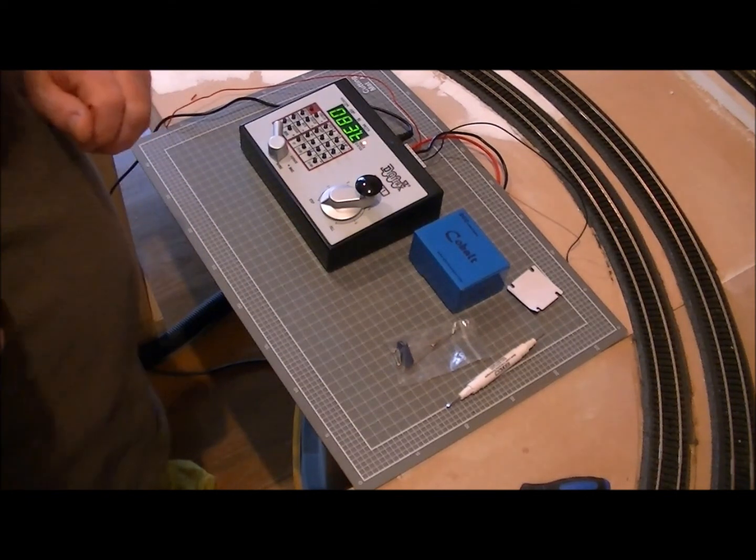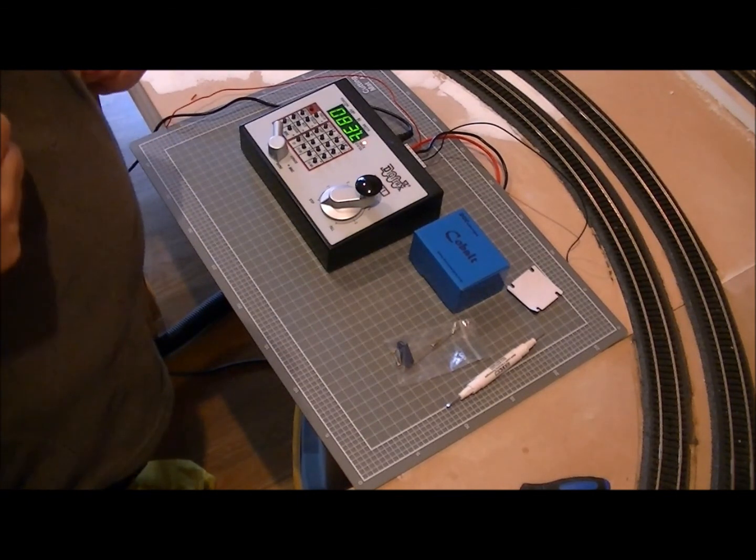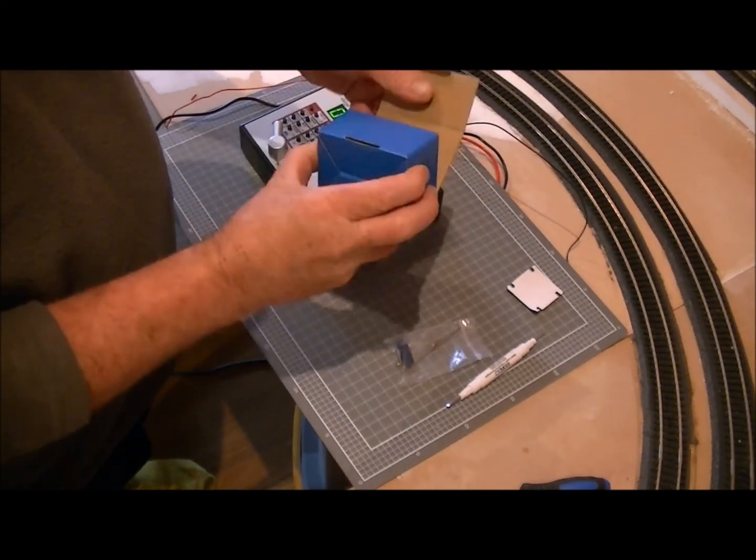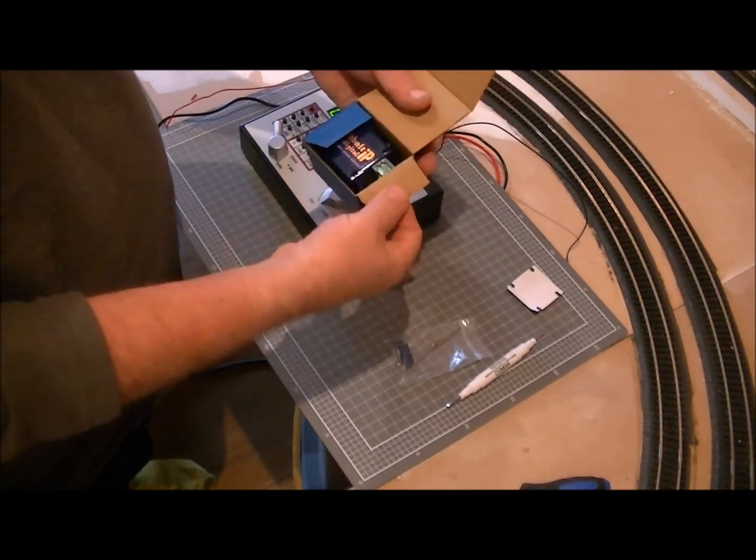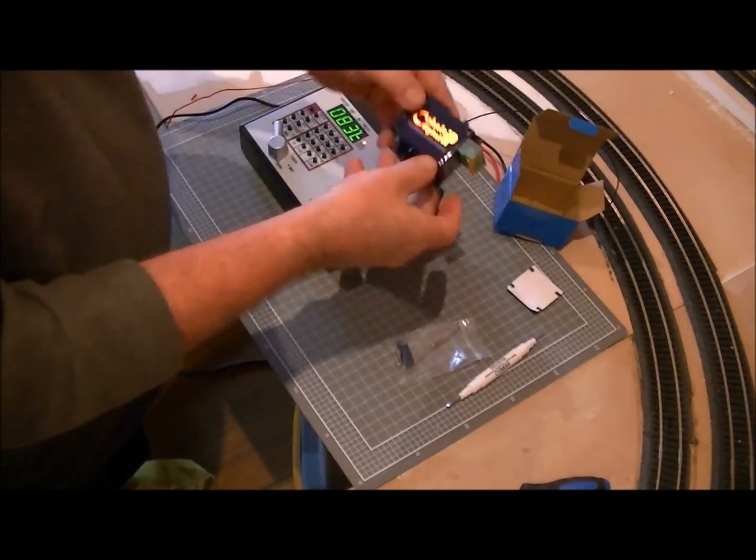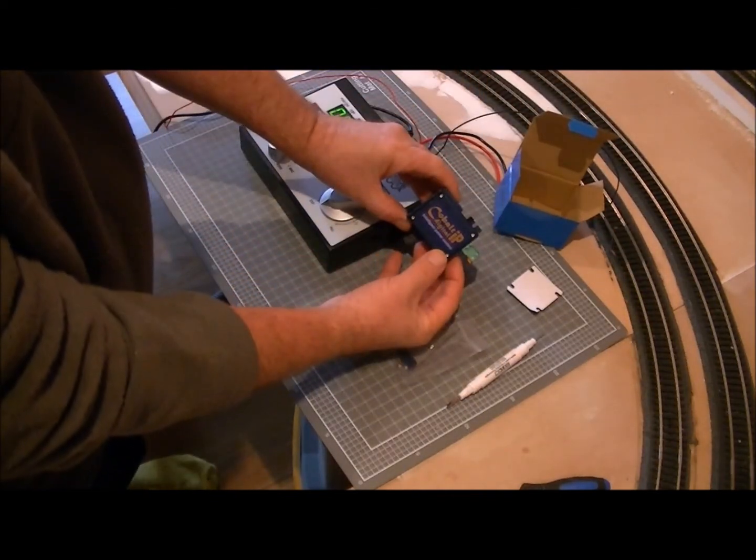Okay, there are a couple of things to know about these point motors. Take it out of the box. This is a box of 12 and they work like a charm. They really do. So like I said, it's the Cobalt Digital IP.